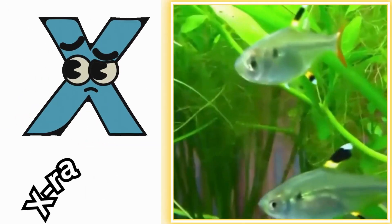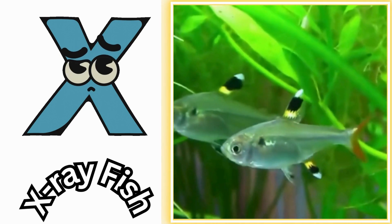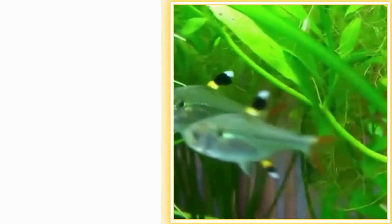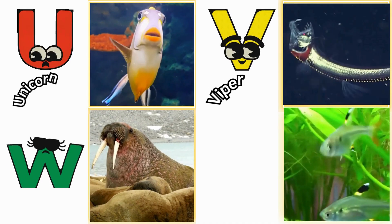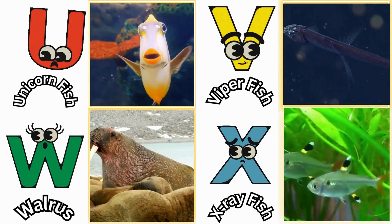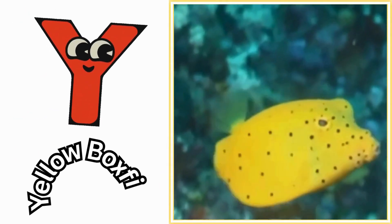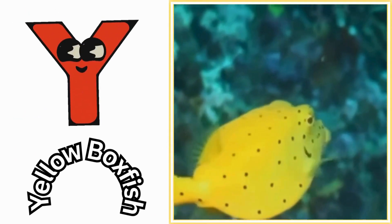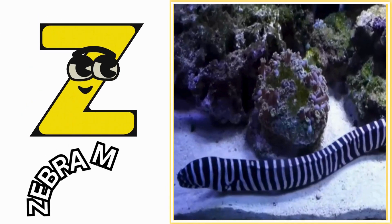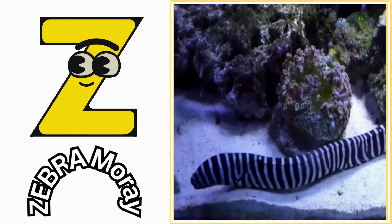X is for x-ray fish. Z, x-ray fish. Y is for yellow boxfish. Yeah, yellow boxfish. Z is for zebra moray. Z, zebra moray.